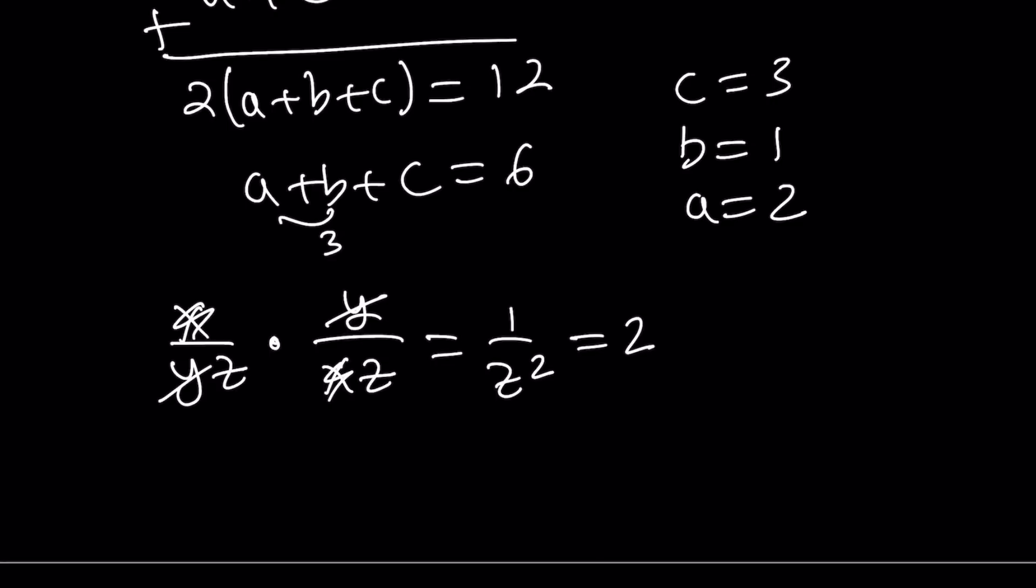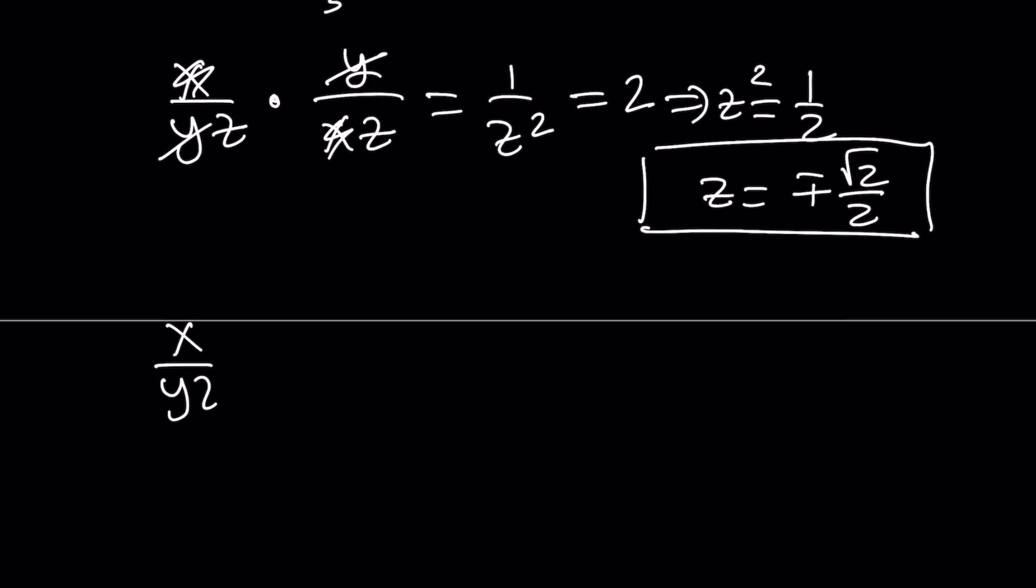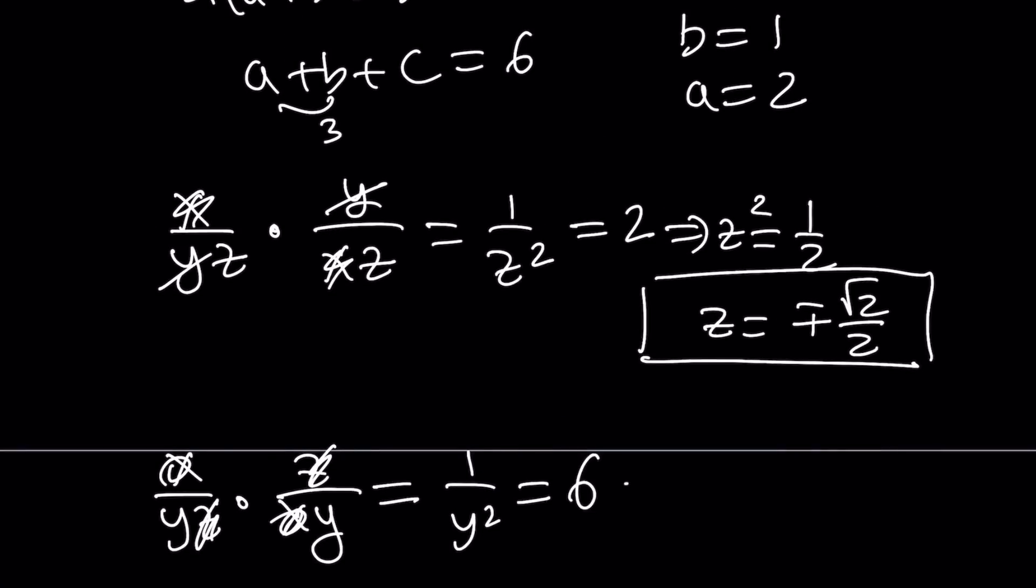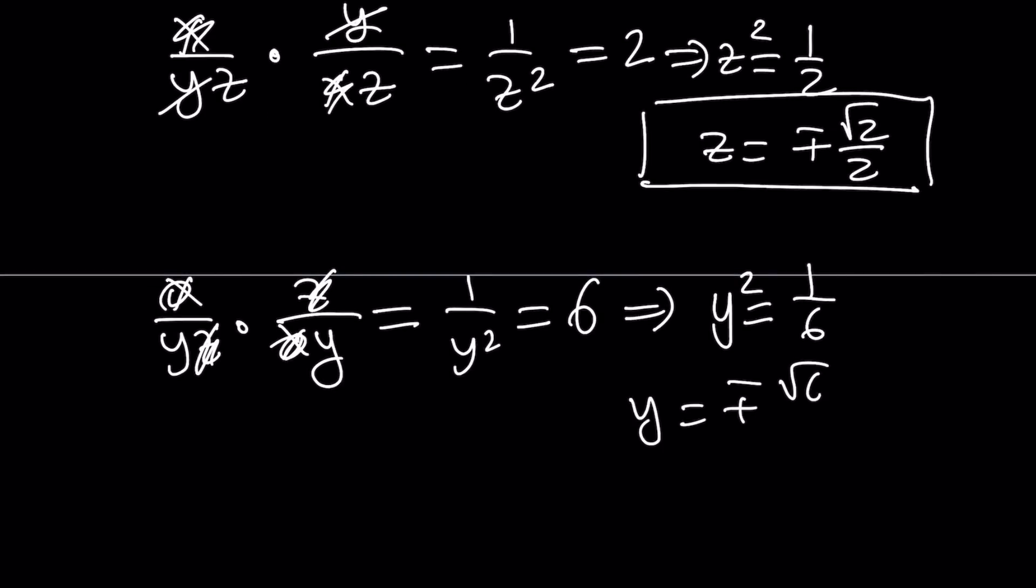From here you get Z squared is equal to 1 half, and Z just becomes plus minus root 2 over 2. It's normally 1 over root 2, but I just simplified it or rationalized it, and I got root 2 over 2 from here. All right? Cool. So that is my Z value. I got the Z value. Let's go ahead and find the other one. So for example, if I take X over YZ and multiply it by Z over XY, now this gives me the following. Z cancels out, X cancels out, and I end up with 1 over Y squared. But notice that we're multiplying A and C. So A times C is equal to 6. And from here we get Y squared equals 1 over 6, which means Y equals plus minus 1 over root 6, which can be written as root 6 over 6. Awesome. That is going to be my Y value.